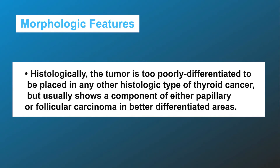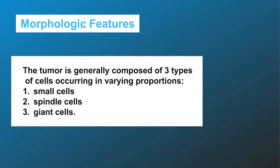Histologically, the tumor is too poorly differentiated to be placed in any other histologic type of thyroid cancer, but usually shows a component of either papillary or follicular carcinoma in better differentiated areas. The tumor is generally composed of three types of cells occurring in varying proportions: one, small cells; two, spindle cells; three, giant cells.